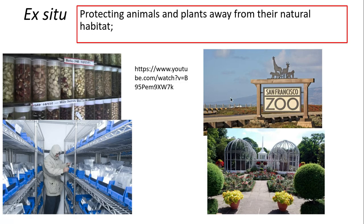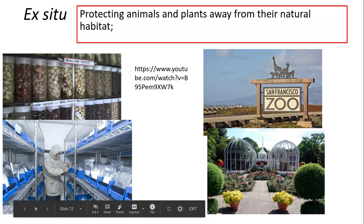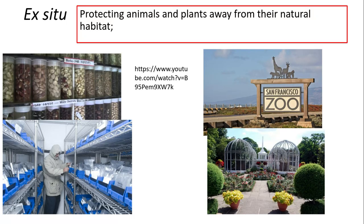Ex-situ conservation is where you protect animals and plants away from their natural habitat. The first example that comes to mind is the zoo, which is taken directly from the mark scheme in a red box. Two other ex-situ examples are botanical gardens, where plants from different parts of the world are placed into a garden, normally grown and protected by governments or local authorities.